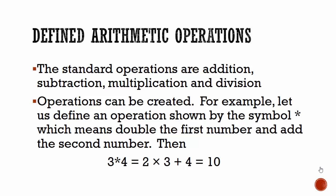For example, let us define an operation shown by the symbol asterisk, which means double the first number and add the second number. Then, 3 asterisk 4 will be 2 multiplied by 3 plus 4. 2 multiplied by 3 is 6, 6 plus 4 is equal to 10.